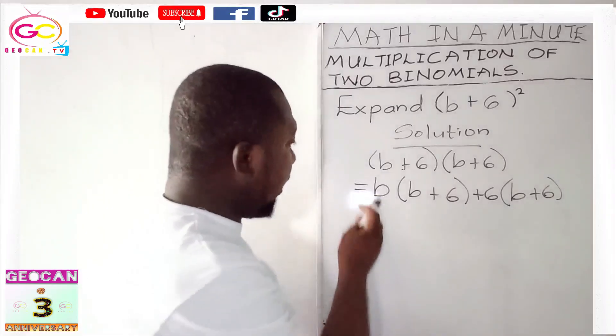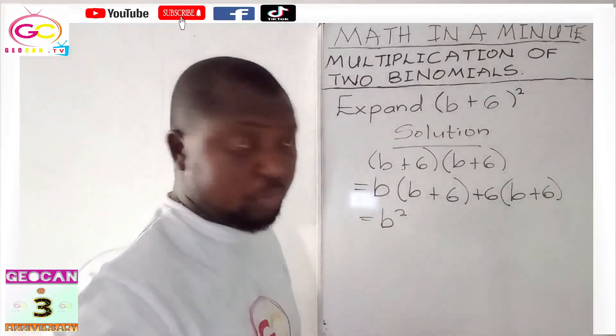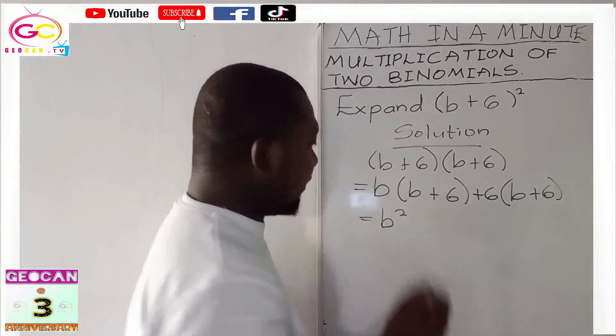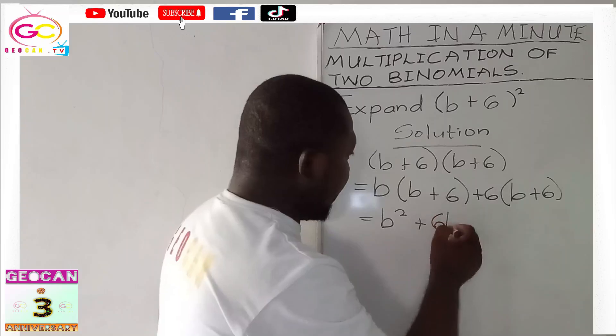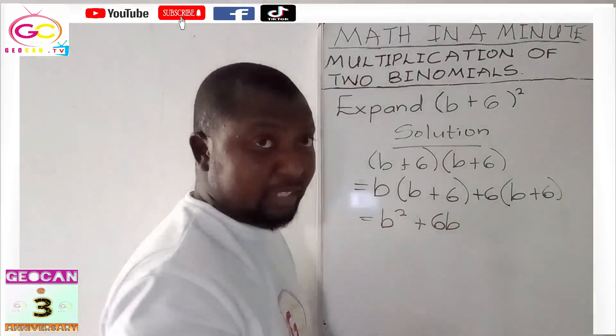Now, let's apply the rules of algebra. b times b will give us b squared or b raised to the power 2. b times 6 is positive 6, it will give us 6b.